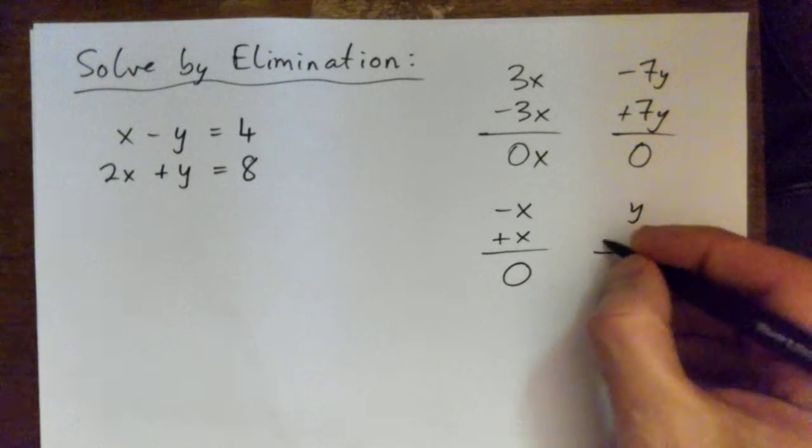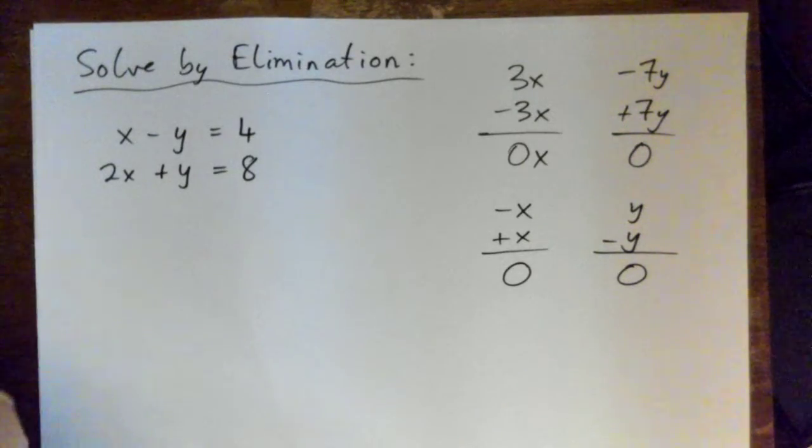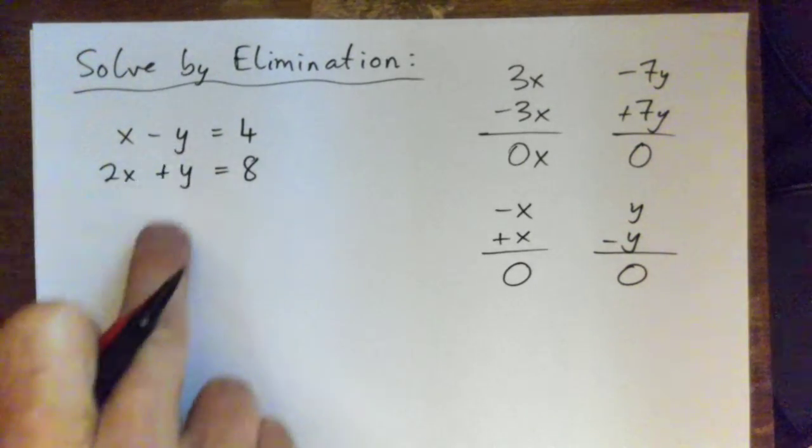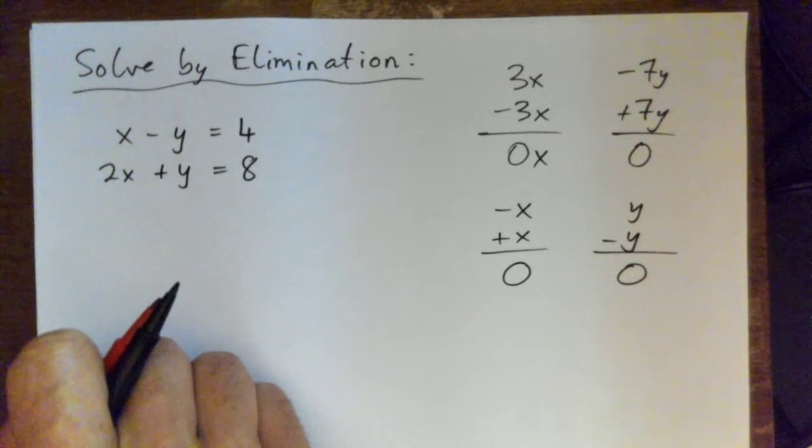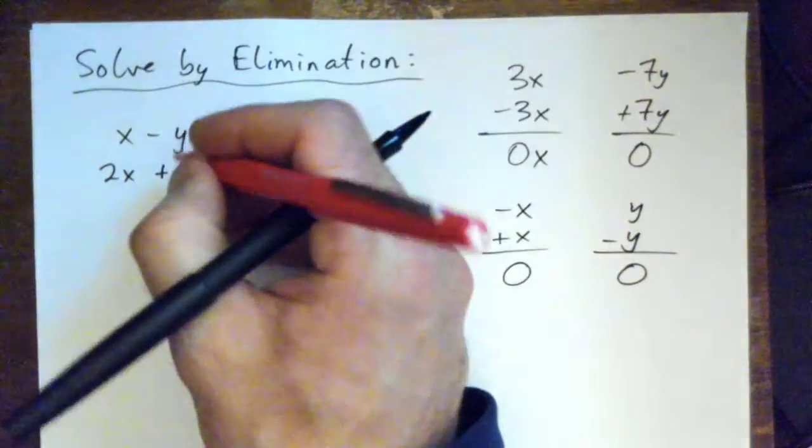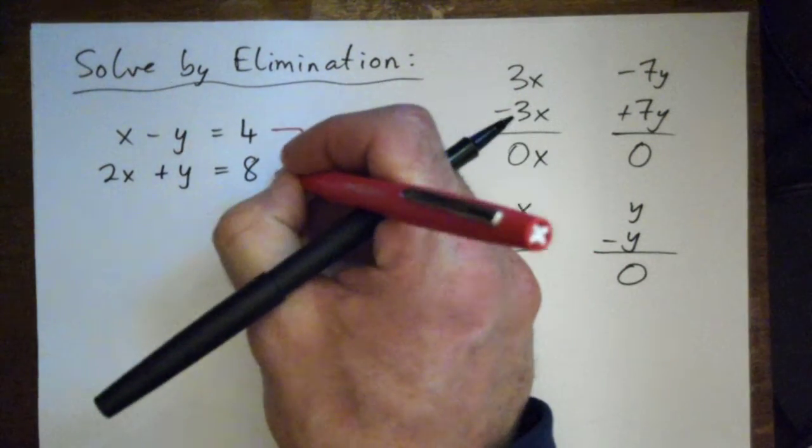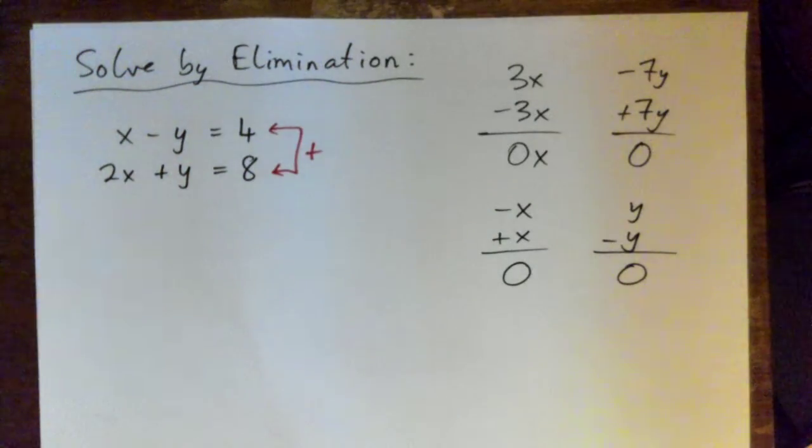So can we see anything that we should try to work on to make that happen in this equation? Lovely, the y's will cancel out. Good, because we already have a negative y and a positive y. So the first step here just happens because we can already see that these y's are going to cancel.